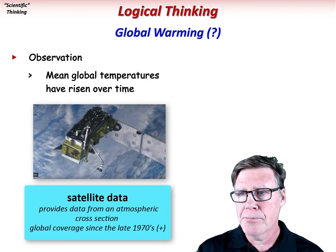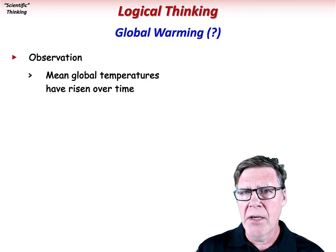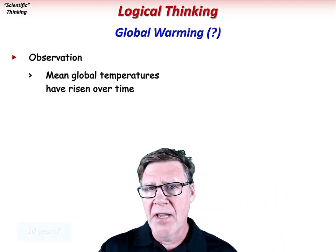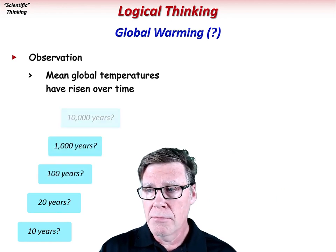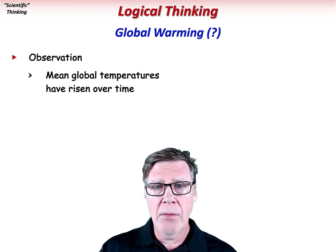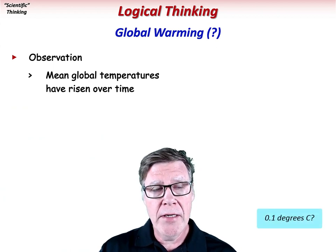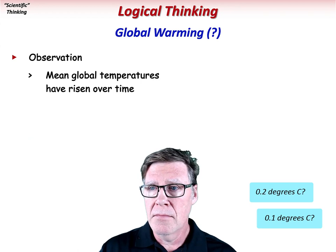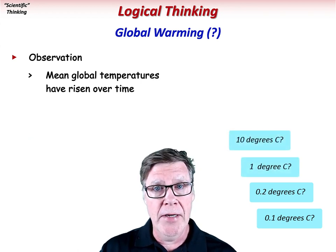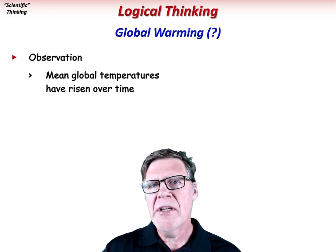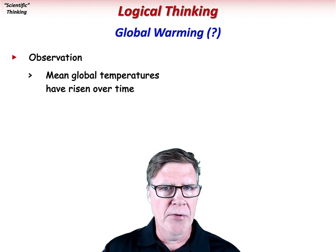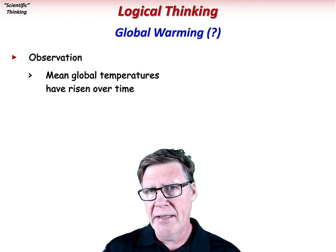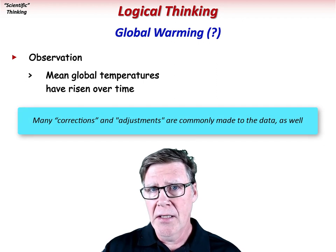There's also satellite data, which basically sees through the whole column of atmosphere. So what are we really talking about — rising temperatures over what period of time? Ten years, twenty years, a hundred years, a thousand years, ten thousand years? And risen by how much — 0.1 degree centigrade, 0.2, 1, or 10 degrees? Reasonable scientists can certainly sit down and discuss the differences in these data sets. The fact that they don't all agree is a warning sign. But let's just go with it — let's assume for the sake of argument that there is a warming trend.